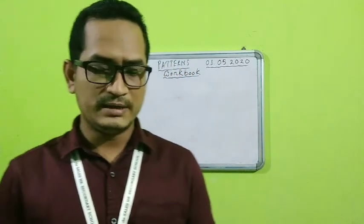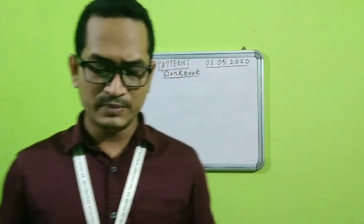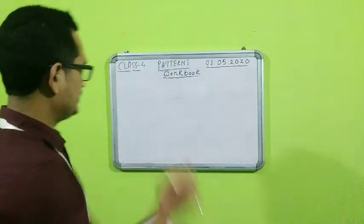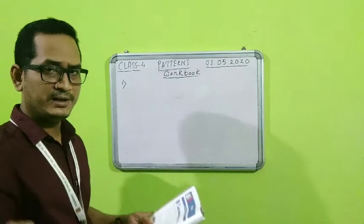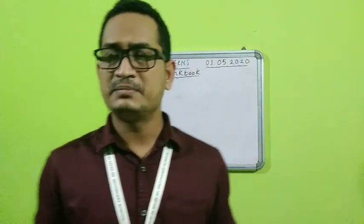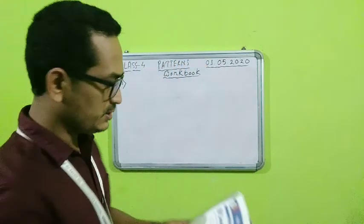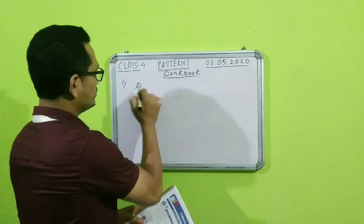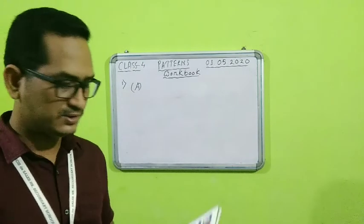On page number 12, the 'I Recall' part is there — section 2.1, multiple choice questions. Question number one: patterns created by humans are called what? Obviously, anything created by humans is not natural, it will be artificial. So the answer to question number one is option A — artificial patterns.